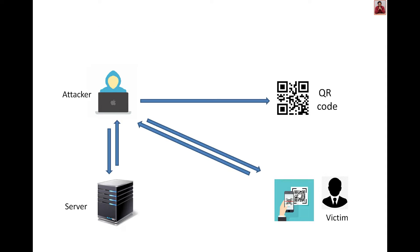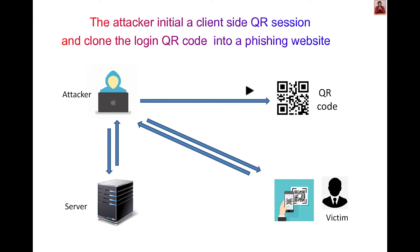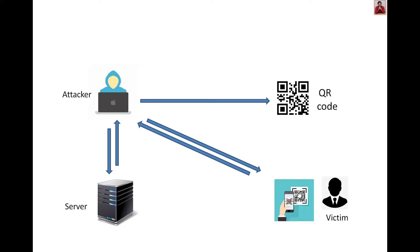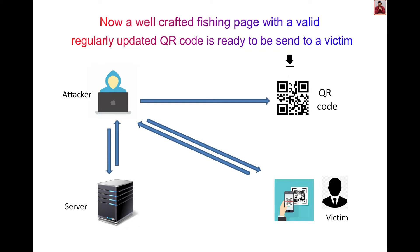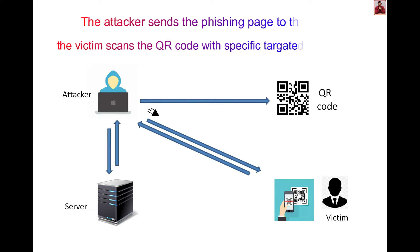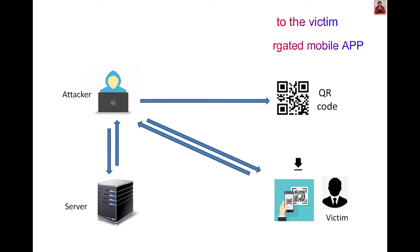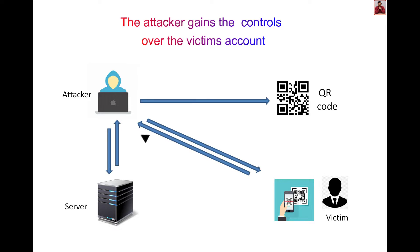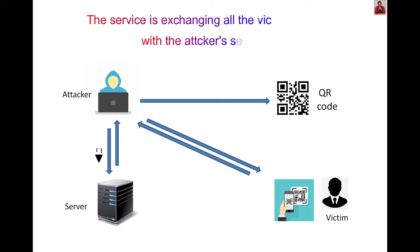Webjacking: The attacker initiates a client-side QR session and clones a login QR code into a phishing website. A well-crafted phishing page with a valid and regularly updated QR code is then sent to a victim. The victim scans the QR code with a targeted mobile application, and the attacker gains control over the victim's account. The service exchanges all the victim's data with the attacker's session.